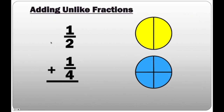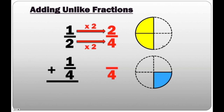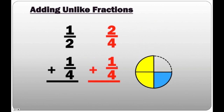Adding unlike fractions: we have 1/2 plus 1/4. Here we have one whole and another whole. We need to make the first one a half, and the second one only 1/4. We can't add them because they don't have the same denominators. To find the LCD, we get 4. How do we go from 2 to 4? 2 times 2 is 4, and we do the same to the numerator: 1 times 2 is 2, making 2/4. For the 4, we multiply by 1, giving us 1/4. So now we have 2/4 plus 1/4, which gives us 3/4.